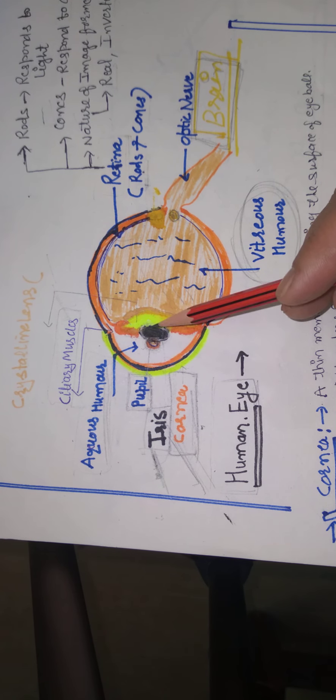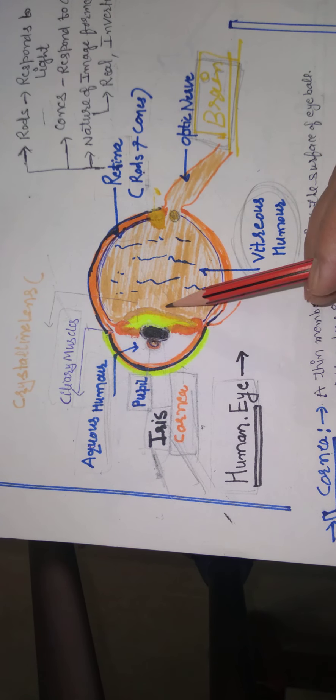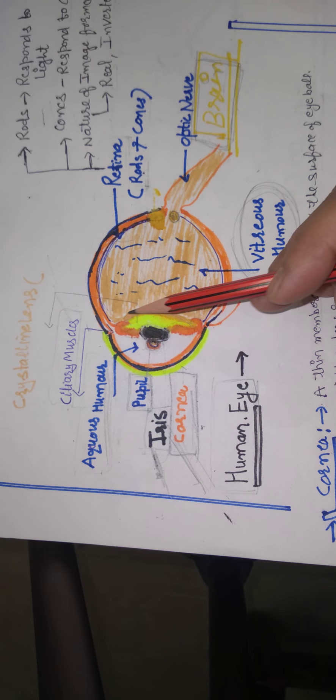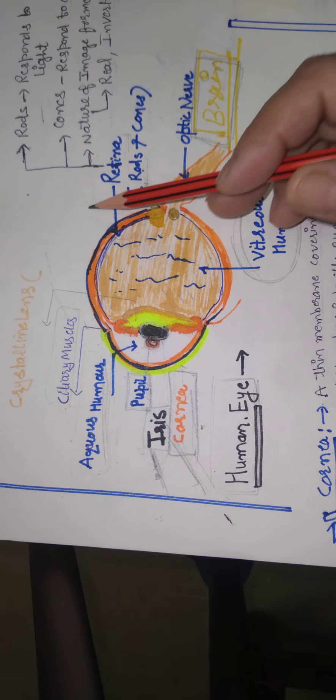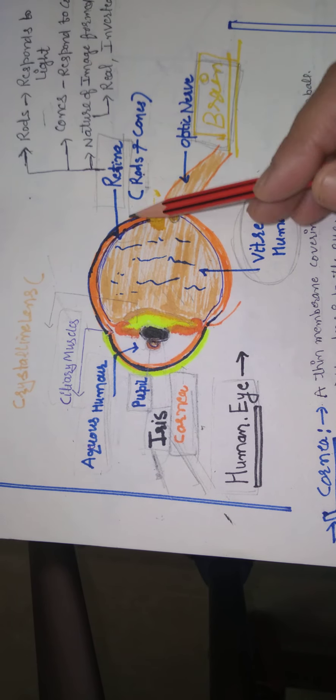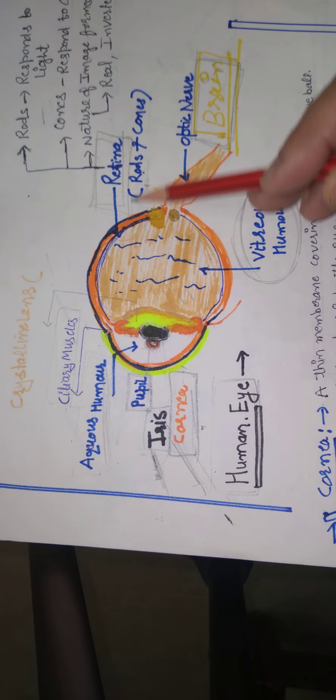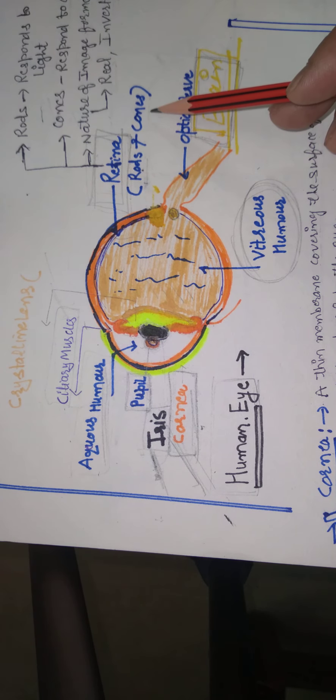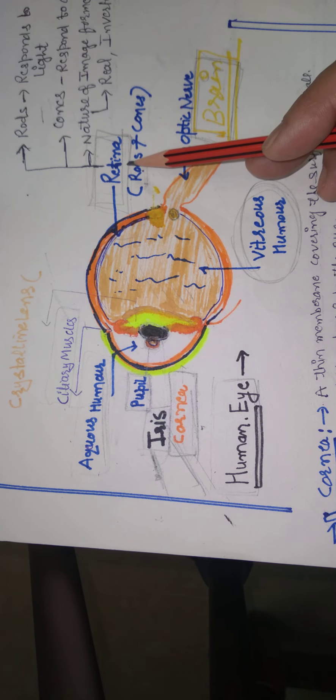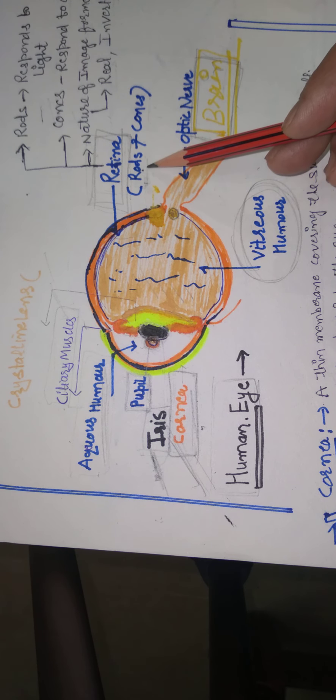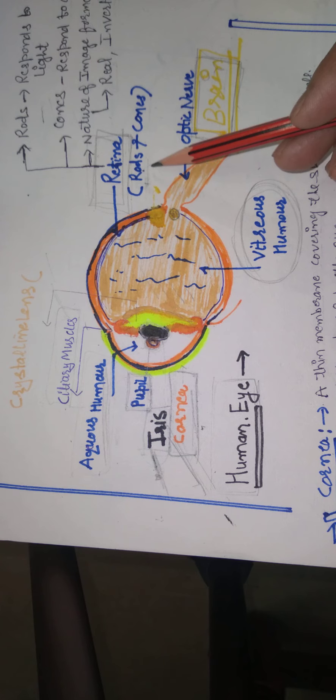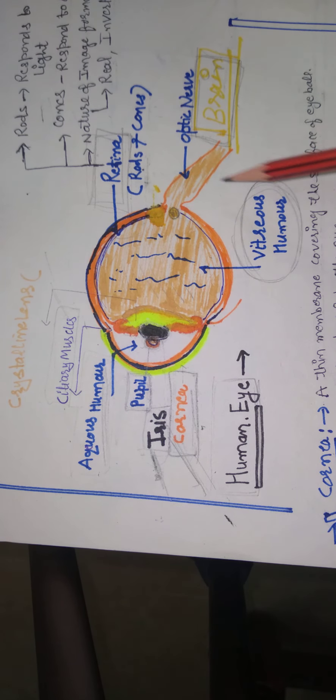Thereafter, the light enters into the eye completely and falls on the screen of the eye. Eye की screen का नेम है retina. Retina, composed of rods and cones. These cells illuminate when light falls on the retina.